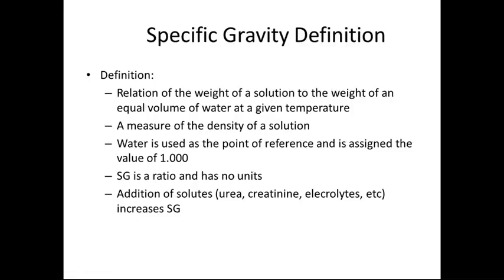Specific gravity, by definition, is the relation of the weight of the solution to the weight of an equal volume of water at a given temperature — it is the measure of the density of the solution. Water is used as a point of reference and is assigned the value 1.000. Specific gravity is a ratio and has no units. Solutes such as electrolytes — sodium, potassium, chloride, and others — as well as creatinine and urea, all increase the specific gravity.